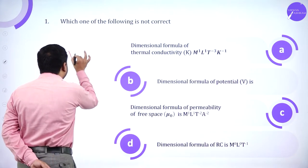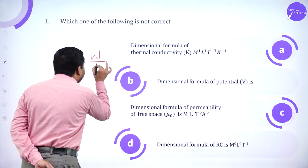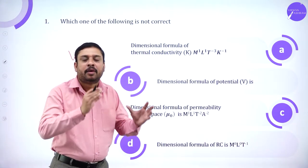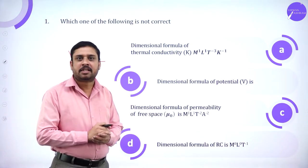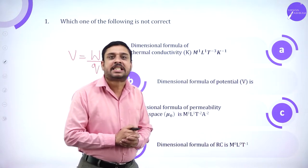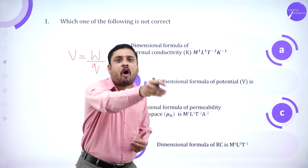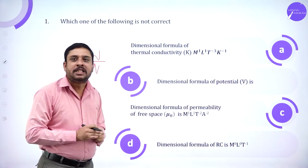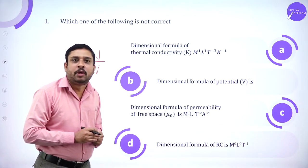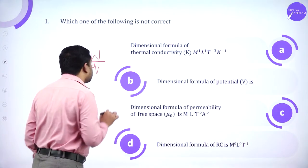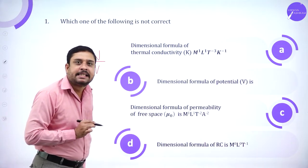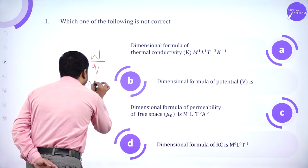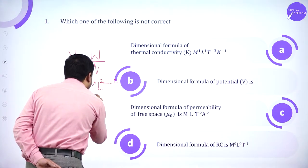By the basic definition of potential, V equals W divided by Q. Potential is nothing but the work done to move a charge from infinity to a point inside the electric field. Mathematically, potential equals W divided by Q. Work has the dimensions of energy, therefore it is ML²T⁻².